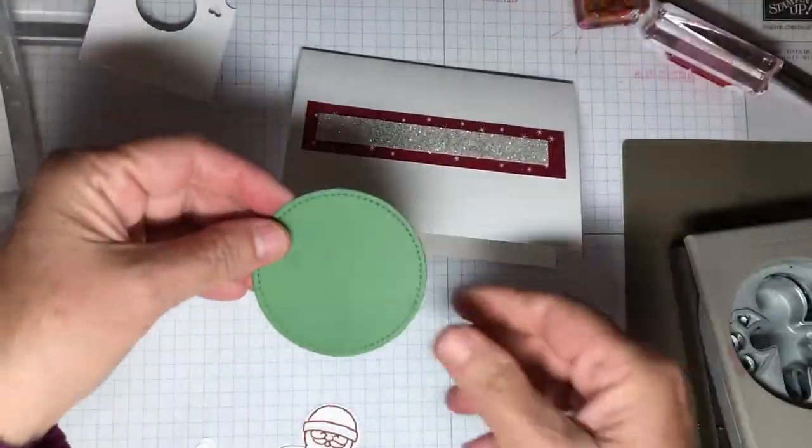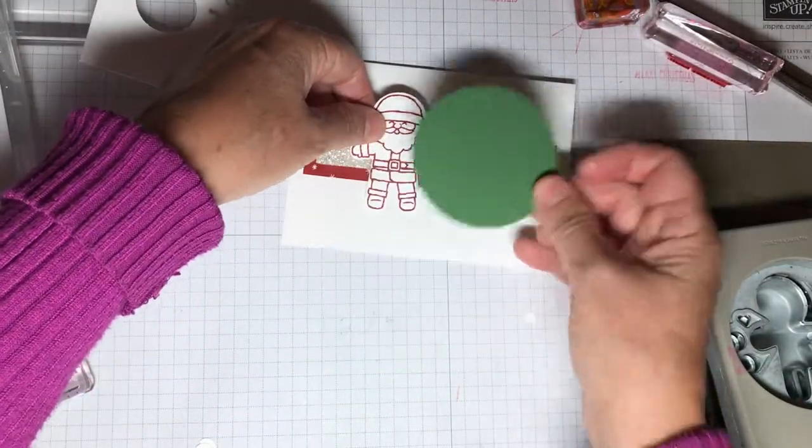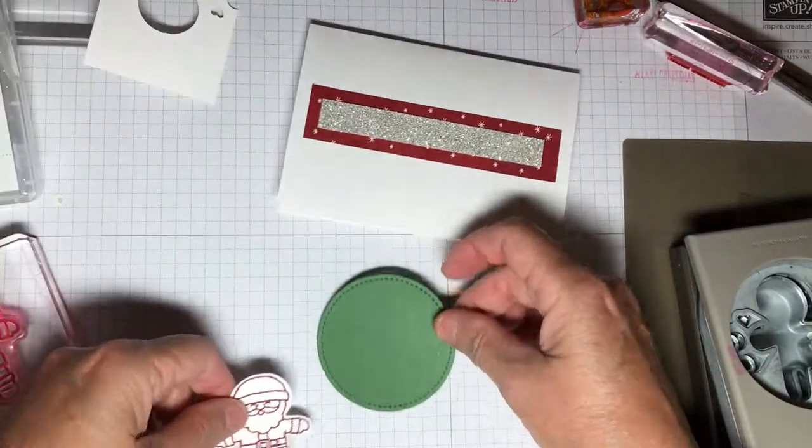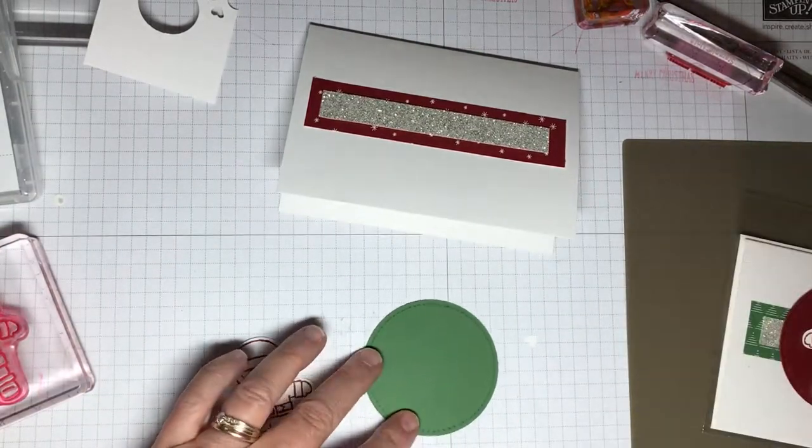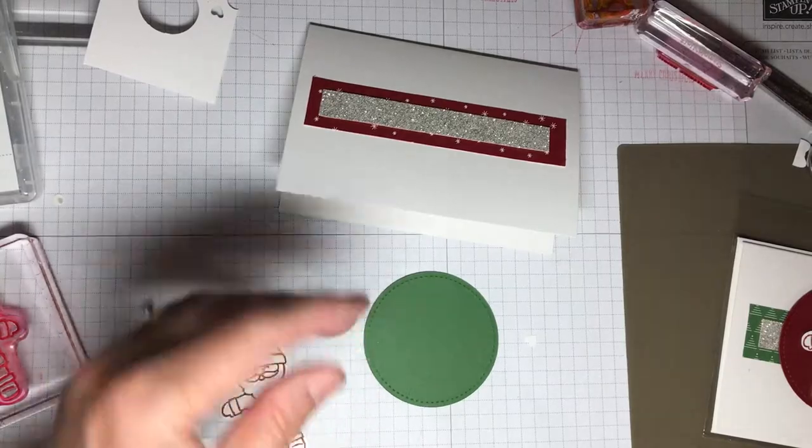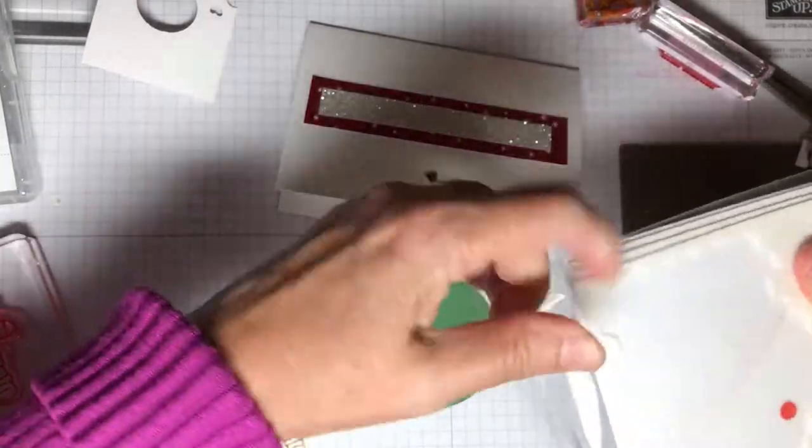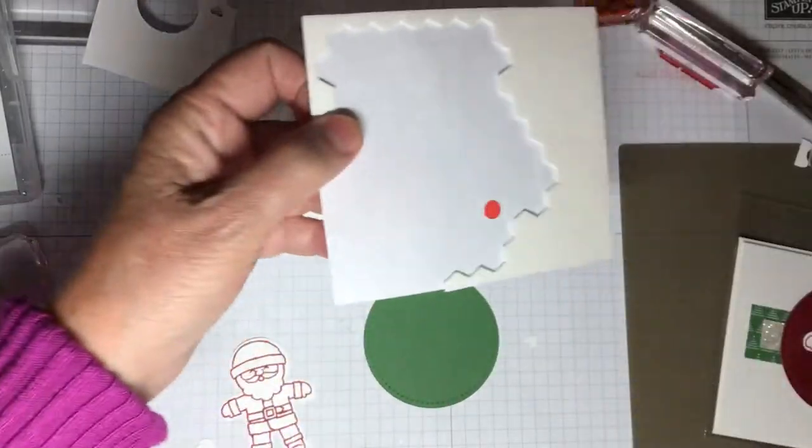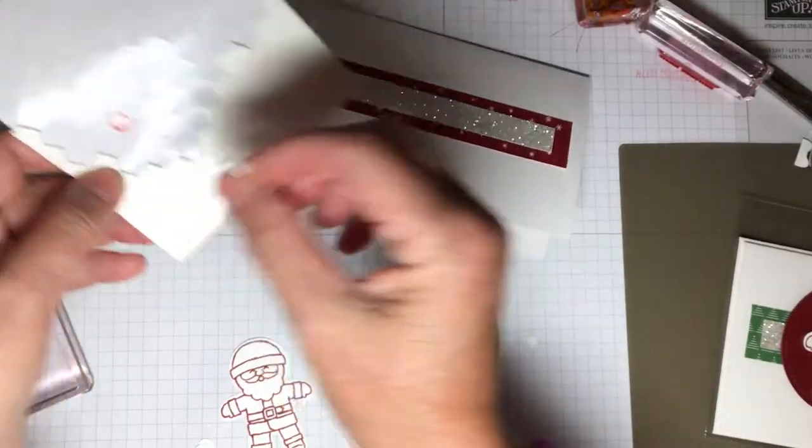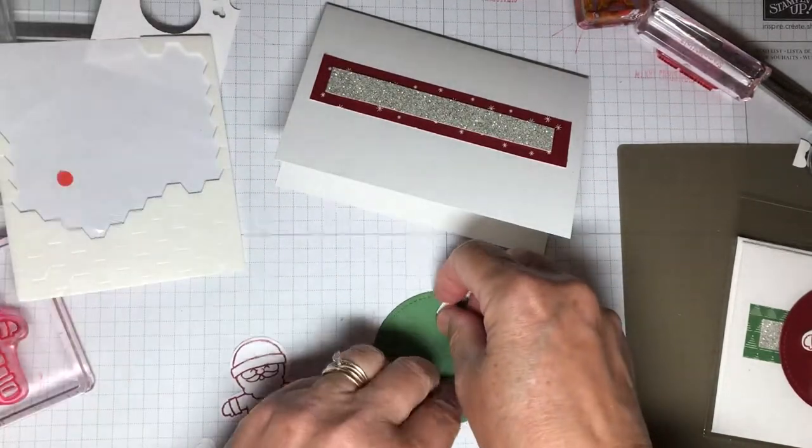You know, you probably wouldn't have to do this next layer, but I really wanted him to stand out. So I used a little garden green cardstock, and I think I will adhere that with some dimensionals. Just adds a little something to have those layers popped up, so just one at the top and one at the bottom will do.